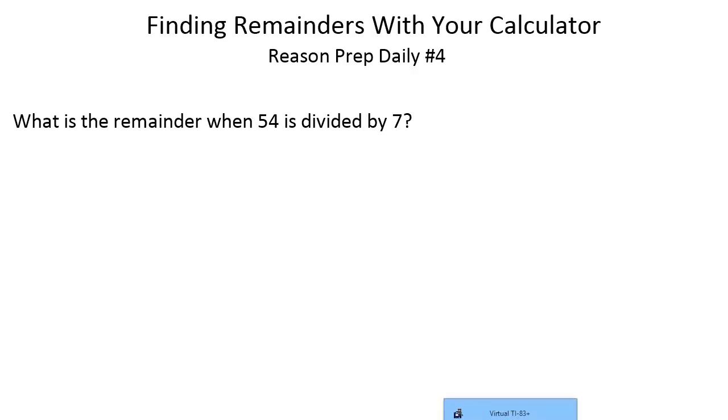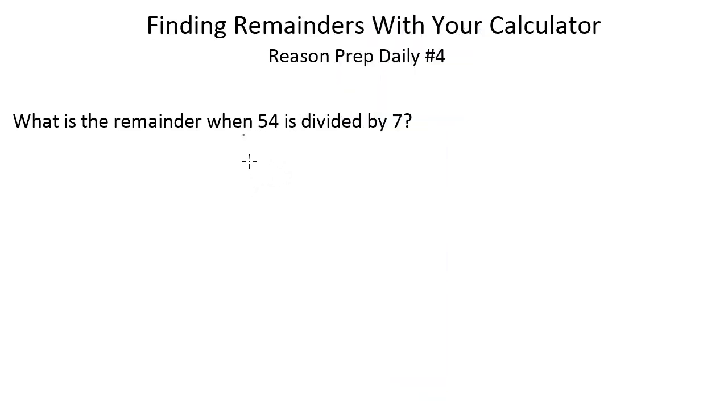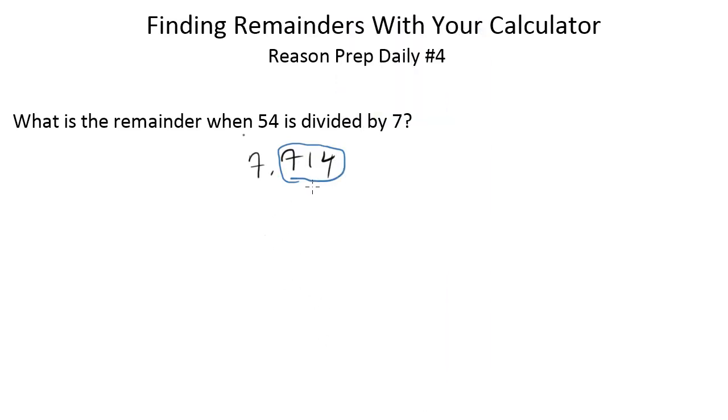Now typically what students will do to find this is they'll go to their calculator, they'll divide 54 by 7 because they'll maybe remember that you got to do that, and then we'll get 7.714 and they'll say okay 7.714 and then they'll say oh well maybe the remainder is like this 0.7 or 0.714 or something